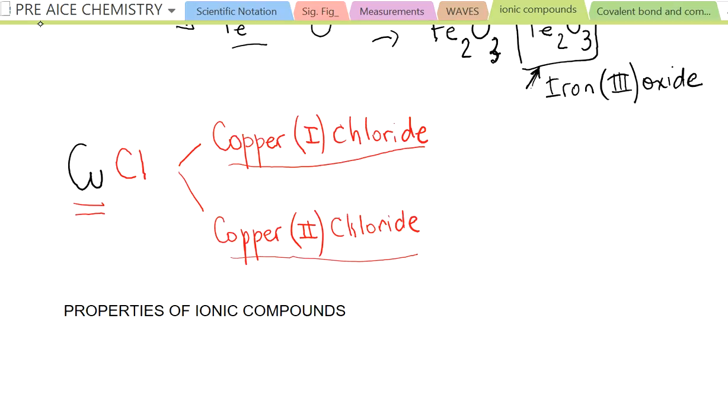So the copper we said that what? Gives off one. Gives off one. So what is going to form? Cu+. And what about the chlorine? Cl-. So the formula is going to be as it is. CuCl. Yes?